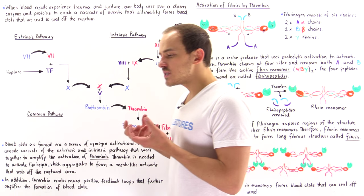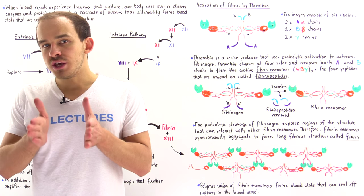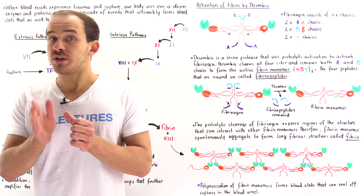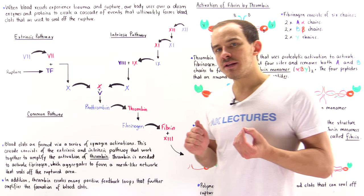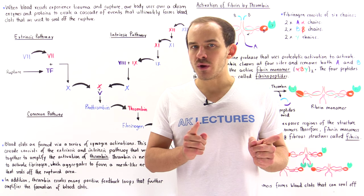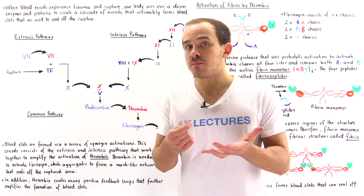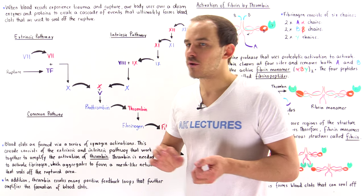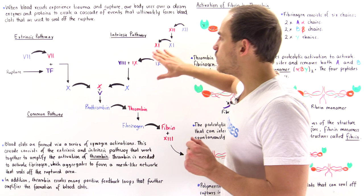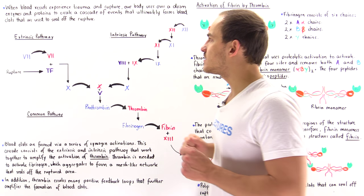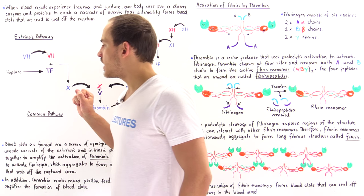Suppose we have some type of trauma inside our blood vessel, and the endothelium of that blood vessel basically ruptures — we have a cut in our blood vessel. Two different processes, two different pathways begin to take place. One of these pathways is a quick process and the other pathway is a bit slower. We have the extrinsic pathway, that's the quick one, and the intrinsic pathway, which is the slightly slower one.